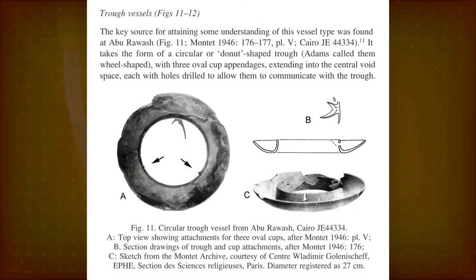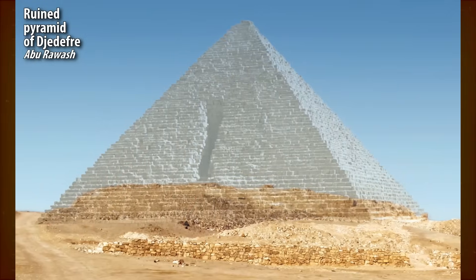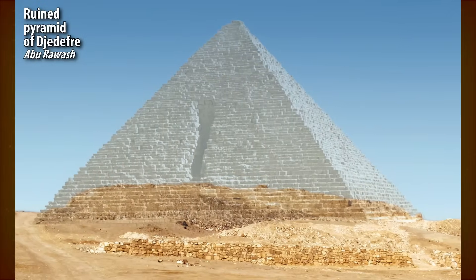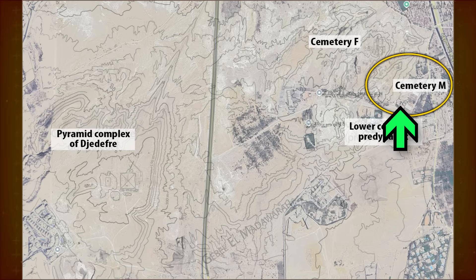Serious stoneworking skills were also required to make some other objects from that era, though they're not as big as Sabu's disk. One such object was found by the French archaeologist Pierre Montet, between 1938 and 1946, in Abu Rawash. Most viewers will associate Abu Rawash with Djedefre, so let's clarify. This is Djedefre's Pyramid, Fourth Dynasty. This is Cemetery M, First Dynasty. This is where this object was found.